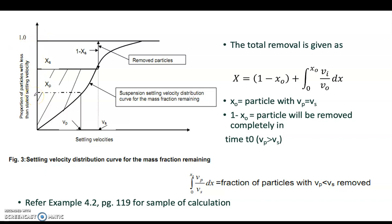It will produce this kind of curve showing the proportion of particles with less than stated settling velocity, which is the x part. The settling velocity b is actually z over t, z_0 over t_0, or z_1 over t_1. You will plot this graph. You may refer to example 4.2 on page 119 for sample calculations.